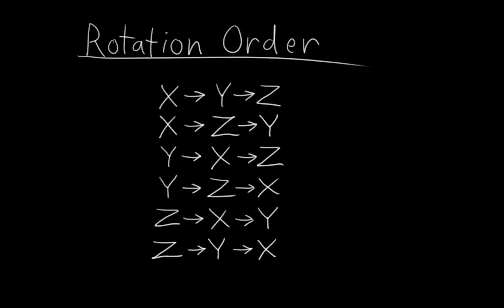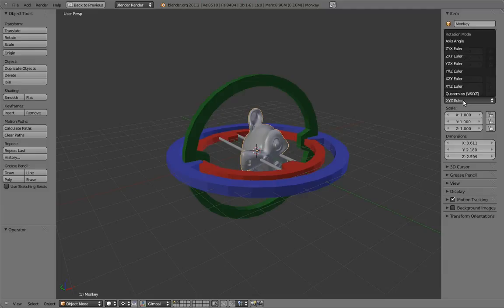Blender has a simple way to choose this. In the rotation mode menu, you see a bunch of Euler options. The x's, y's,